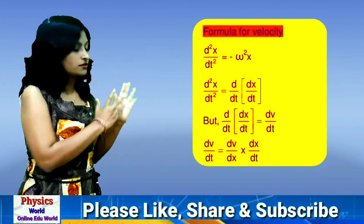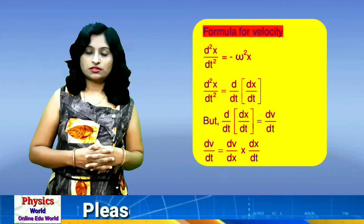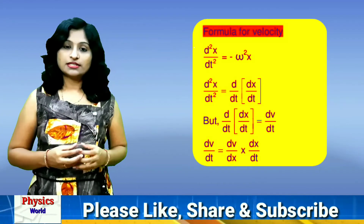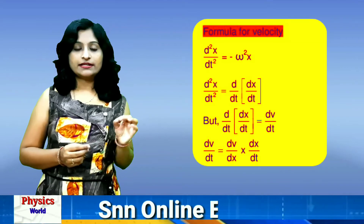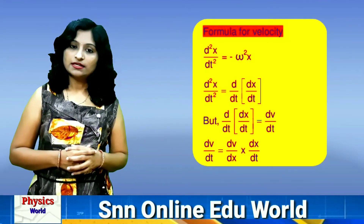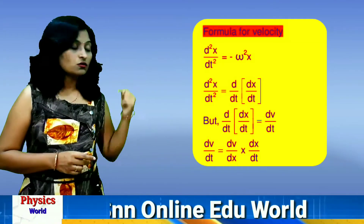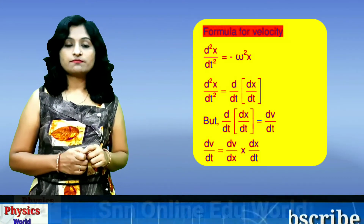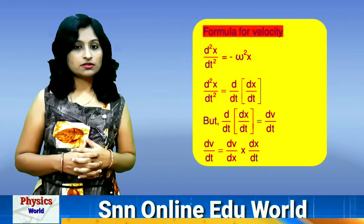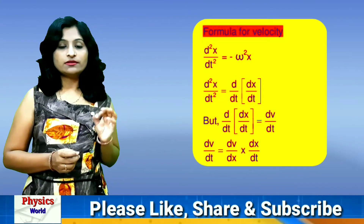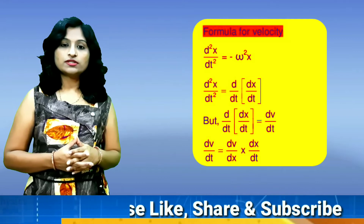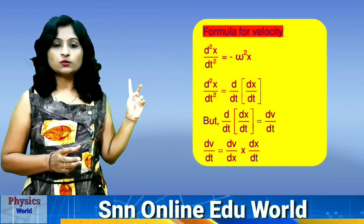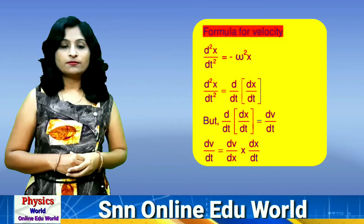First we concentrate only on the LHS of this equation. The LHS is d²x/dt², which we will separate as d/dt of dx/dt. The derivative of displacement dx/dt with respect to time is nothing but the velocity. So here we get dv/dt — the rate of change of velocity with respect to time.